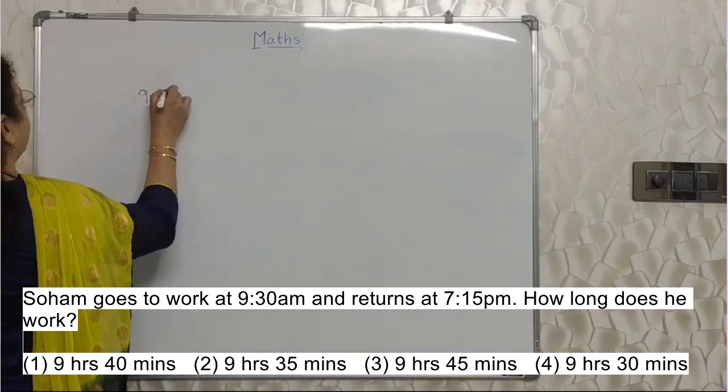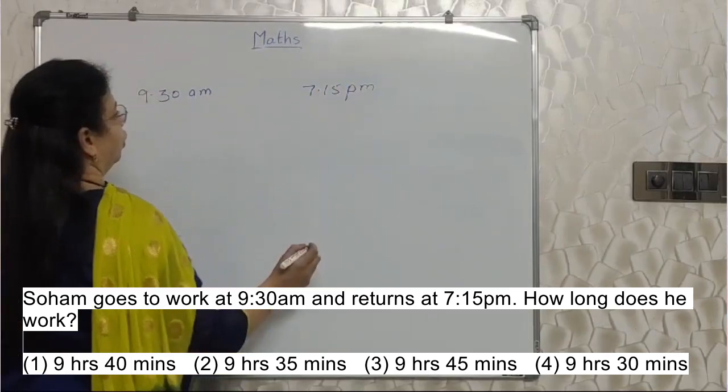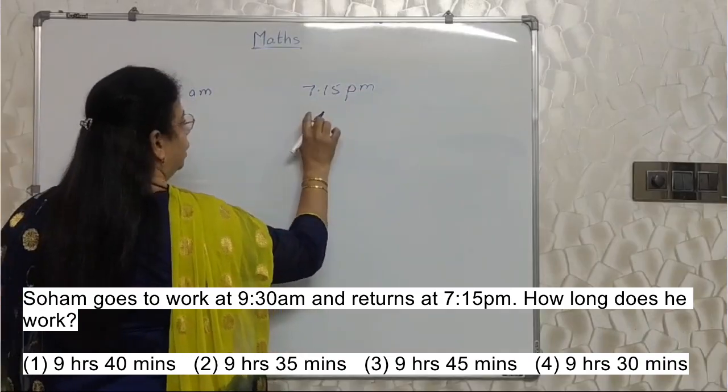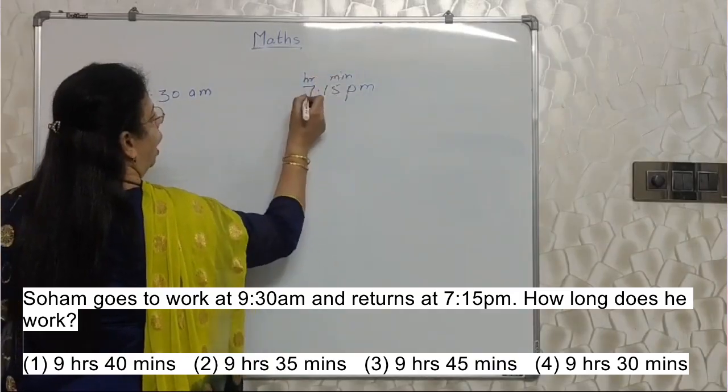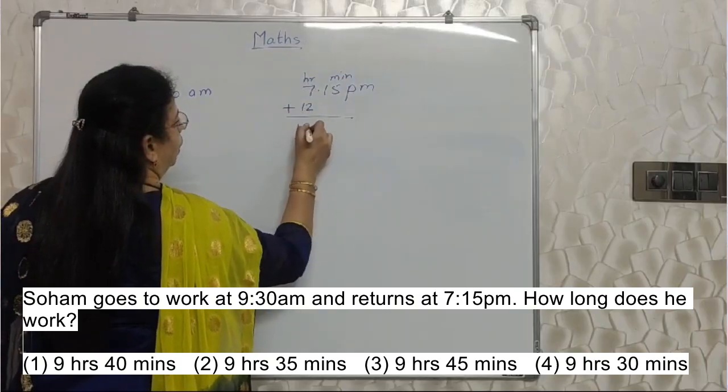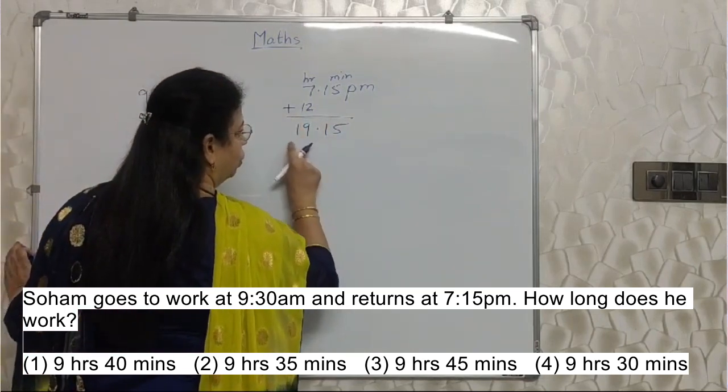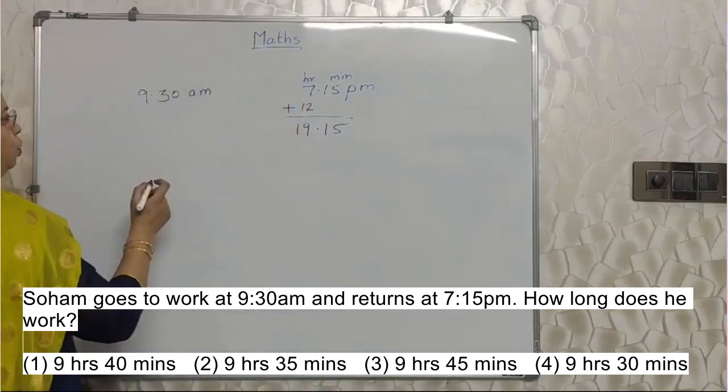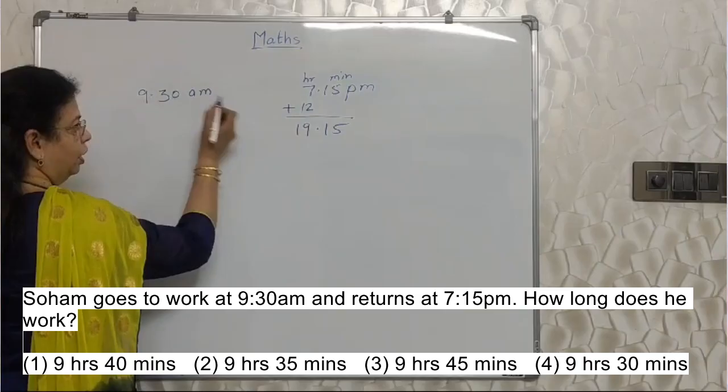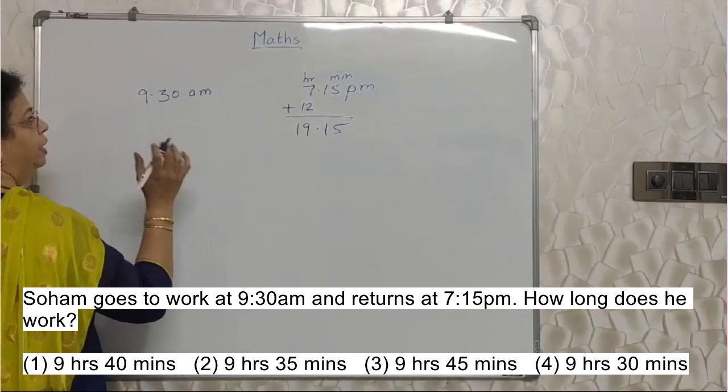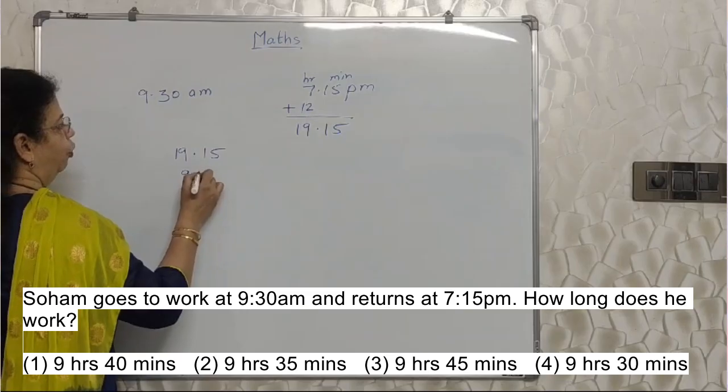He leaves at 9:30 a.m. and when he comes back, 7:15 p.m. Whenever you see p.m., you must convert that into 24 hour clock. What does it mean? These are hours, these are minutes. So in the hour you have to add 12, straight away. So the new time will be this. So you have to go ahead with the calculation with the help of this and not 7:15. So let's do it. He goes at 9:30, comes at 19:15. So the subtraction in between, that will be his total time when he is out for work. So 19:15 and 9:30, you have to do minus.